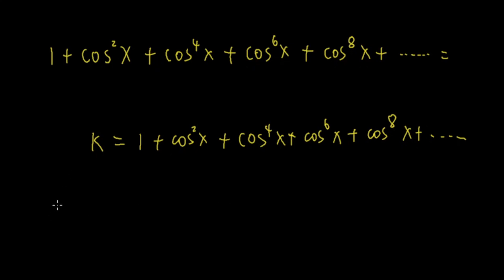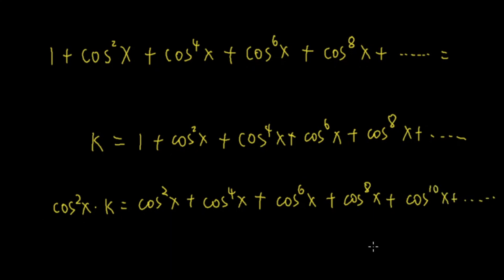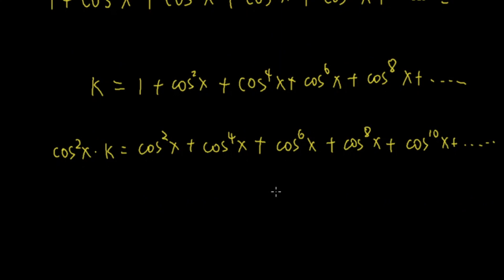So on the left side it will be cosine squared x times k. On the right side, 1 times cosine squared x is cosine squared x, plus cosine squared x times cosine squared x is cosine to the 4th x, plus cosine to the 4th x times cosine squared x is cosine to the 6th x, plus cosine to the 6th x times cosine squared x is cosine to the 8th x, and so on.